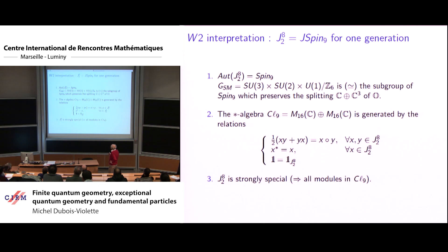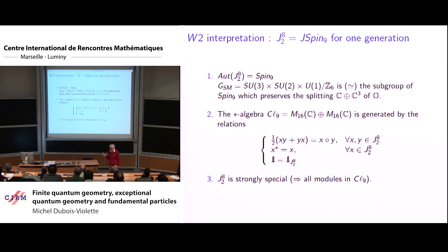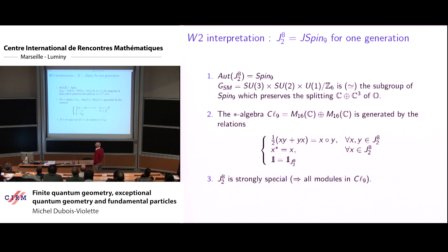The two-by-two Hermitian octonionic matrix is a spin factor of degree nine. The automorphism group is Spin(9), but the subgroup of automorphisms which preserves the splitting of the octonion as C ⊕ C³ is exactly SU(3) × SU(2) × U(1) / ℤ₆, which is exactly the gauge group of the standard model for one generation. This shows I am on the right track.